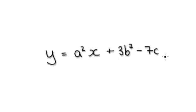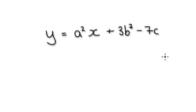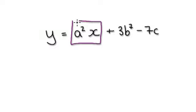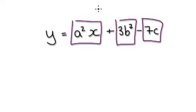In one of the earlier videos, I gave you something like this and asked you to make x the subject of this equation. You would then visualize it as this: one block plus this block, take away this block here. You're trying to make x the subject, so you would get rid of these two boxes here.